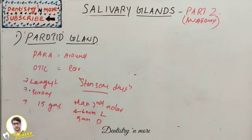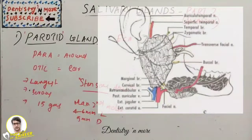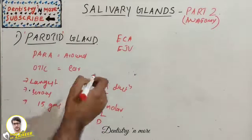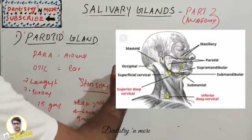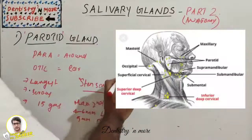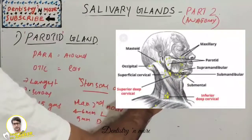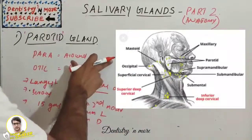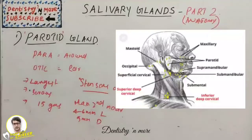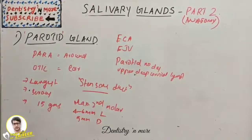A small portion of the parotid accompanies the duct forming an accessory gland. The blood supply is mainly from the external carotid artery, with venous drainage to the external jugular vein. For lymphatic drainage, lymph first drains into parotid nodes, then to the upper deep cervical lymph nodes.